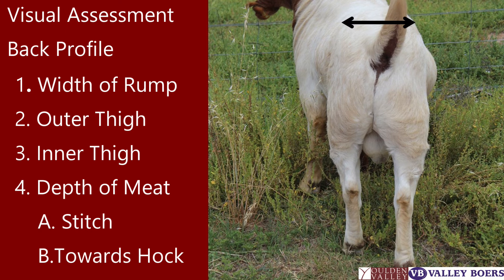So from the back profile there are a number of aspects to consider: the width of the rump, the outer and inner thigh, and the depth of meat at the stitch and down towards the hock.